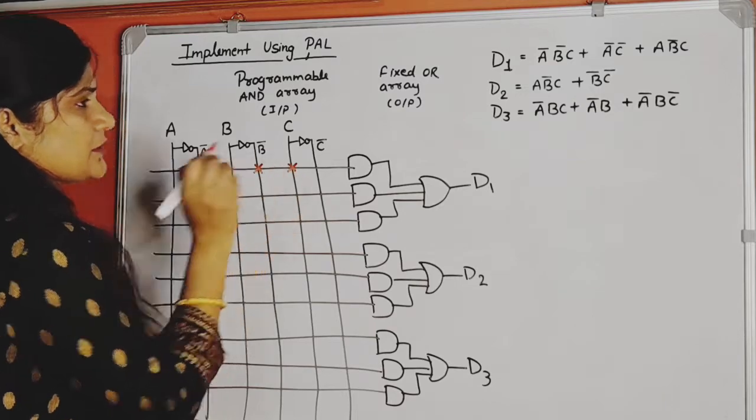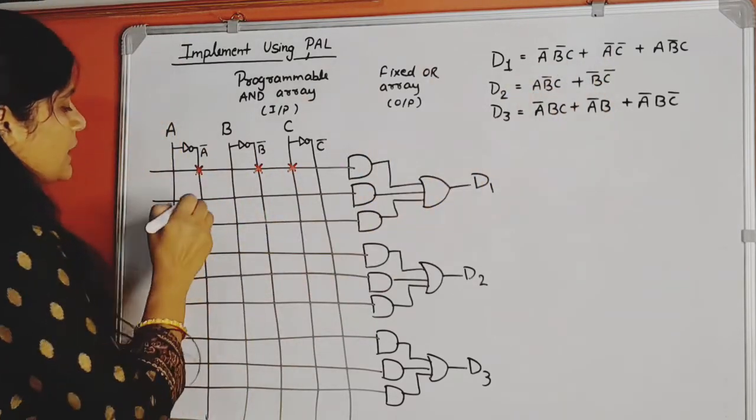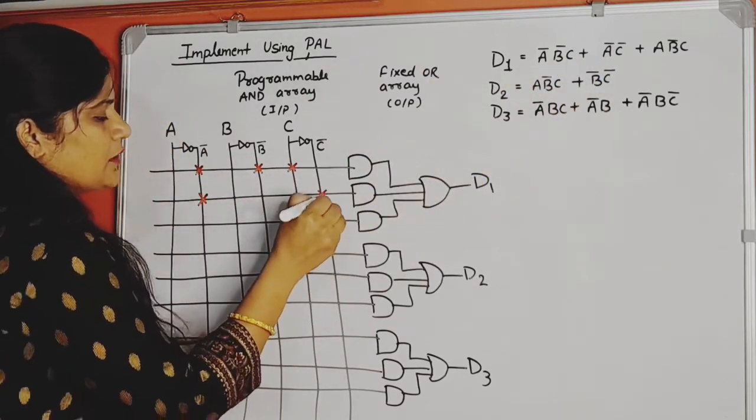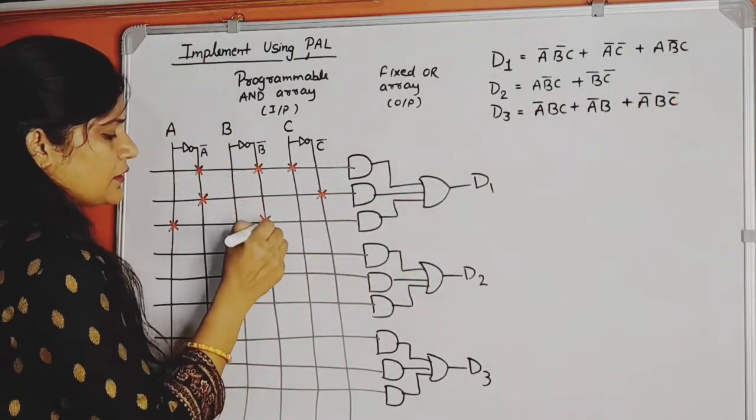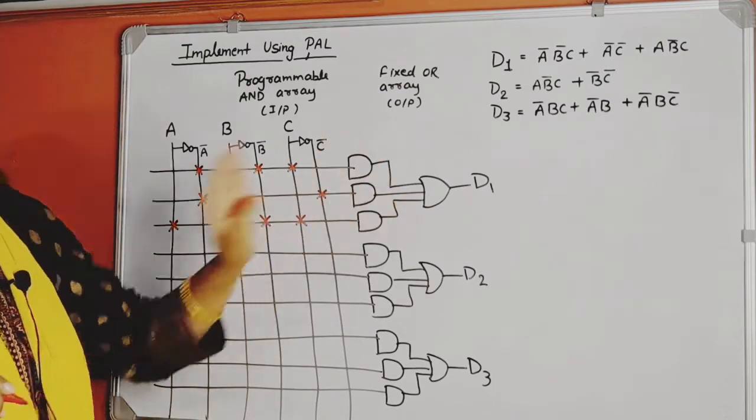Check the first term: A̅B̅C. A̅ is here, B̅ here, and C. Done. Now second term is A̅C̅, so A̅, C̅. Now next term is AB̅C, means A, B̅, and C. Done, and we have completed D1.